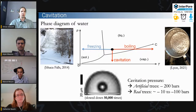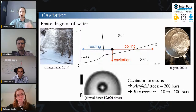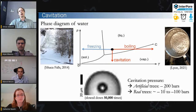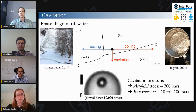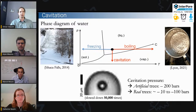Cavitation is a very fast, sudden, and violent event. What's interesting is that cavitation actually happens not at the transition line itself, but at much lower pressures — typically absolutely negative pressures. In artificial trees, we estimate cavitation happens when the pressure in the fluid reaches minus 200 bars. In real trees, it's more moderate negative pressures, still on the order of minus 10 to minus 100 bars. The nucleation mechanisms leading to cavitation in trees may differ from artificial trees.